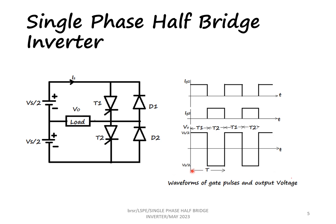The frequency of the output is 1/T. If the frequency of the AC signal is to be changed, the time T can be changed. A serious drawback of the single phase half bridge inverter is that it requires a three wire DC supply. This can be eliminated in a full bridge inverter, where instead of two thyristors, four thyristors will be used.